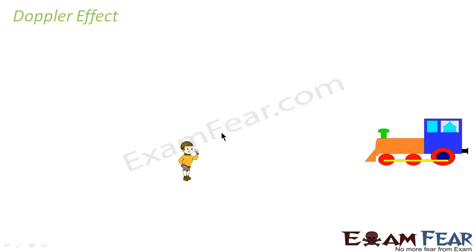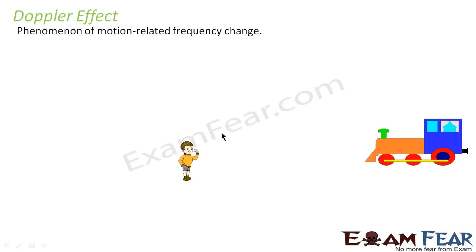The Doppler effect is named after a scientist and talks about the phenomenon of motion-related frequency change. You would have observed this in practical life. Let us suppose you are standing near your home — a truck comes from a very far off distance. As it approaches your house, the sound increases. When it is just passing your house the sound is maximum, and as it moves away the sound decreases. So this phenomenon is known as Doppler effect — as the object's position keeps changing, there is a change in frequency.